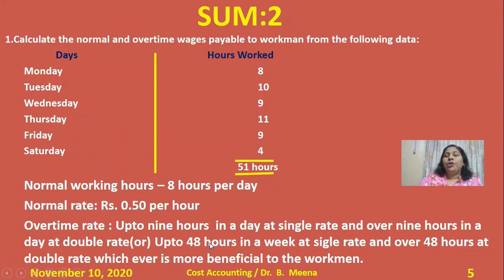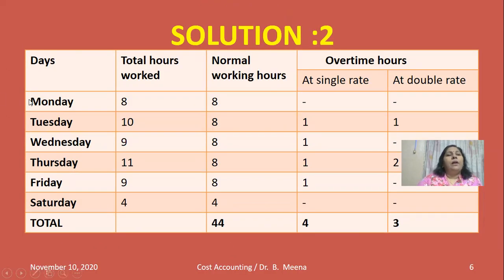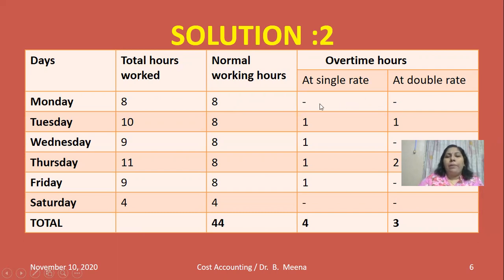We need to find which scheme is more beneficial to the workman, and recommend accordingly. Let me look at the solution. On the left I have the days Monday to Saturday, the second column shows actual hours worked, followed by normal working hours, and then overtime is divided into two sub-columns — single rate and double rate — because Scheme 1 applies single rate up to 9 hours and double rate over 9 hours.